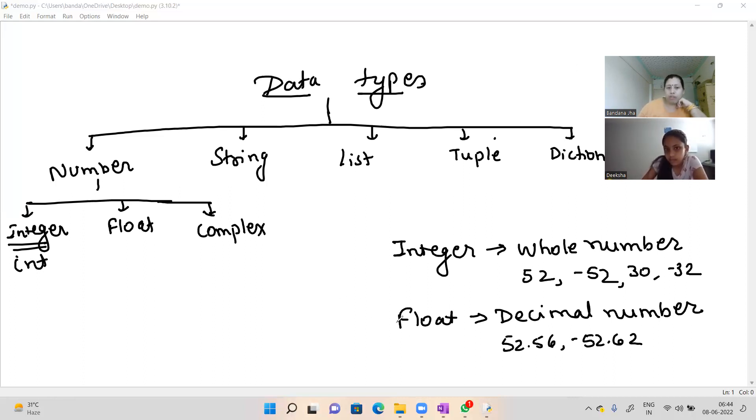Complex is little bit difficult for your level. Complex means suppose if I have taken -5 plus 3i. Wherever the i is there, that is your complex level. This thing I will not teach you because this is little bit higher. You don't know about the complex numbers.